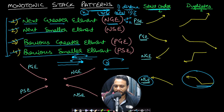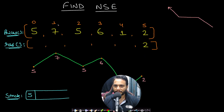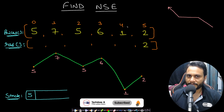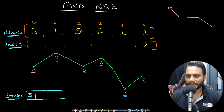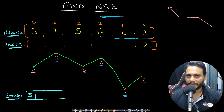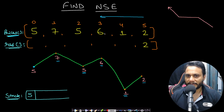Let's take an example with a prices array of six items. For the next smaller element: the next smaller of 5 is 5 itself (because of the equality check). For 7, the next smaller is 5. For 6, it is 1. For 1 and 2, there is no next smaller element. Since we parse from right to left, when we are at a point we know everything to the right — enabling us to answer optimally what the next smaller element is.